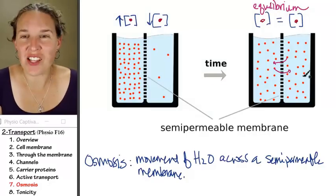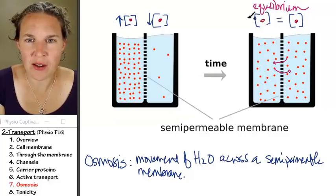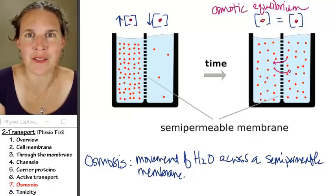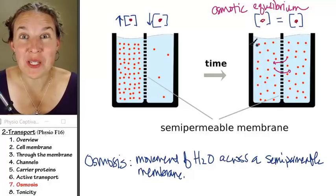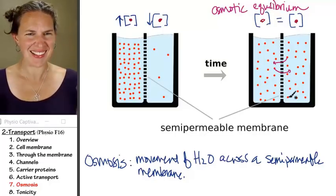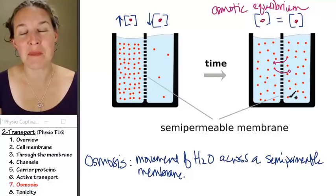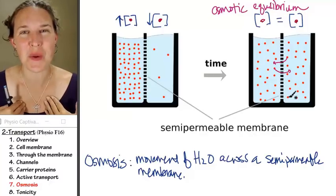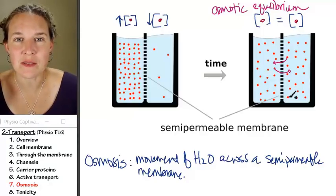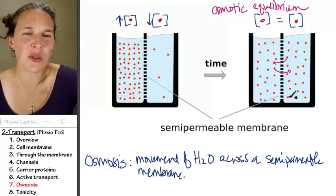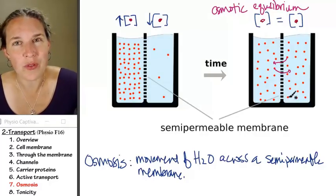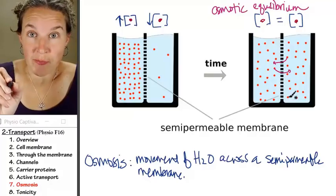Osmotic equilibrium means that our concentrations on both sides are the same. There was no osmosis that happened here. Did water move? Well, water is totally moving, but there's not a net movement of water in this situation. Why? What moved? Particles moved.